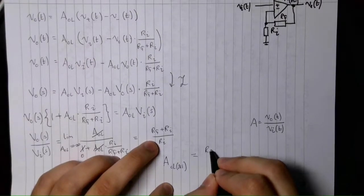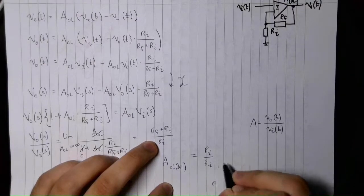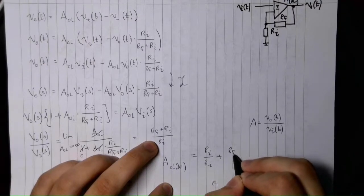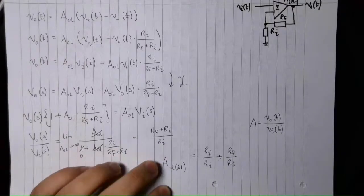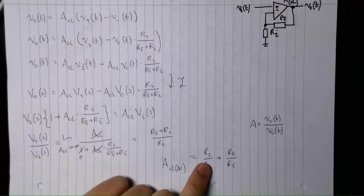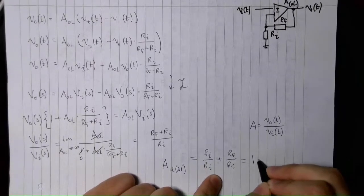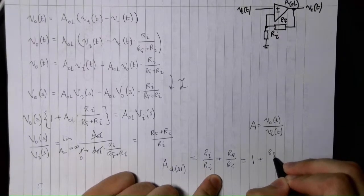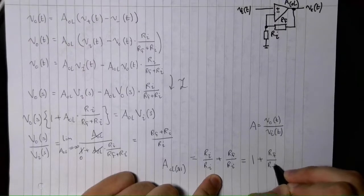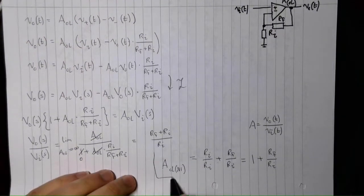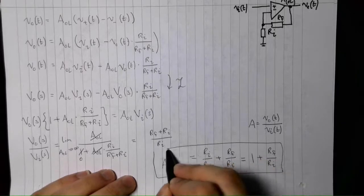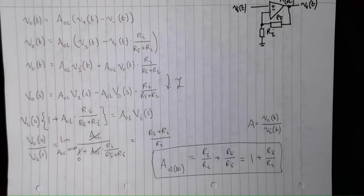So, this is going to be the closed loop non-inverting configuration voltage gain. And that is going to be equal to, let's split this up. So, we have an RI over RI plus our feedback resistor over our inverting input resistor. And you can see that this here goes to a 1. So, we are just left with 1 plus RF on RI. So, this is pretty much the final answer. And note that this formula is only true for the non-inverting configuration.